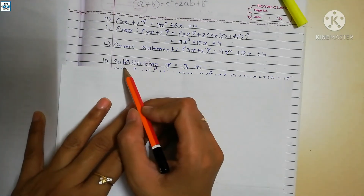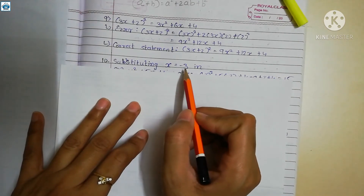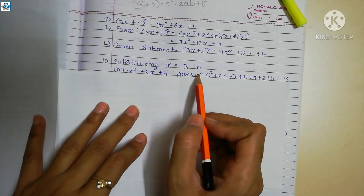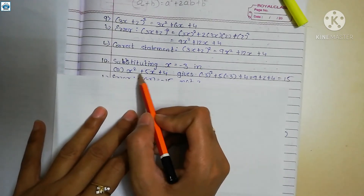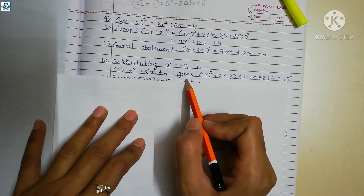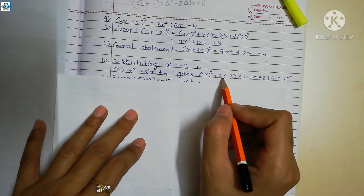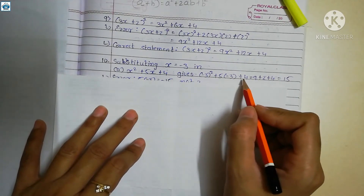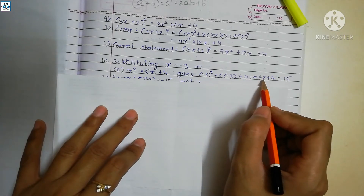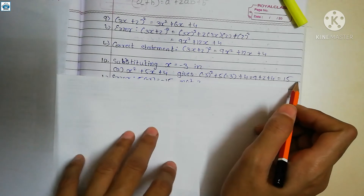Question 10 involves substituting x equals minus 3 in expression (a): x squared plus 5x plus 4. Substituting gives minus 3 squared plus 5 times minus 3 plus 4, which equals 9 plus 2 plus 4 equals 50. The error here is in the middle term — 5 times minus 3 should give minus 15, not plus 2.